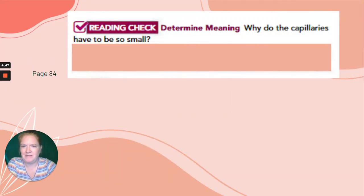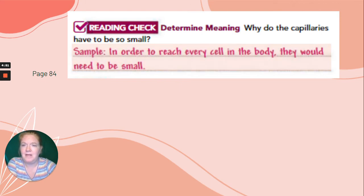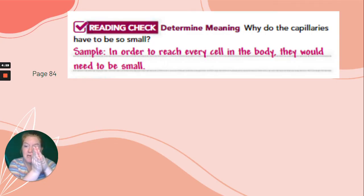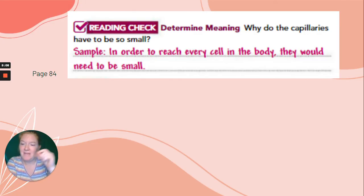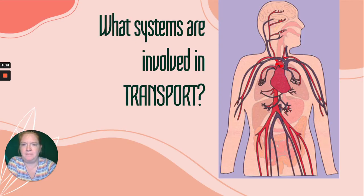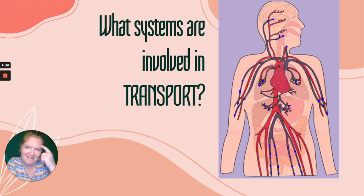So why do capillaries have to be so small? In order to reach every cell in the body, they need to be small. Diffusion happens out of the capillaries — nutrients leave, wastes come in, oxygen and carbon dioxide move back and forth. If the capillaries were not so small, that diffusion would take too long and the cells just would not survive. So what systems are involved in transport?